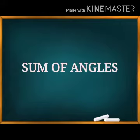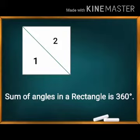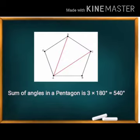Now we are discussing the sum of interior angles of a polygon. In 7th standard, we already learned that the sum of angles of a triangle is 180 degrees. Using this, we can find the sum of interior angles of other polygons. For a quadrilateral, we divide it into 2 triangles. The sum of 2 triangles is 360 degrees, so the sum of angles in a quadrilateral is 360 degrees.